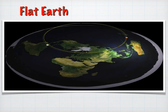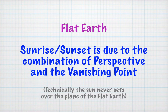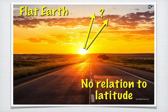On the flat Earth model, the sun does not actually set — it simply traces a path parallel to the plane of the flat Earth. Sunrise and sunset are due to the combination of perspective and the vanishing point, because technically the sun never sets over the plane of the flat Earth. This means the sunrise-sunset angle has no relationship to latitude whatsoever — the angle we see simply does not relate in any way, shape, or form to latitude.